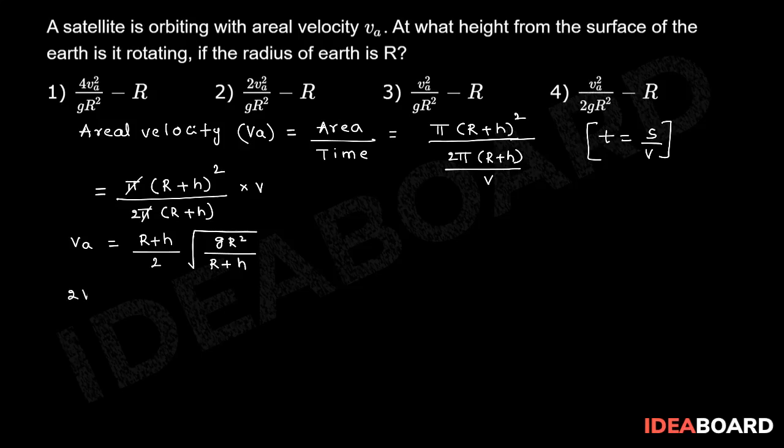So here 2 Va which is equal to r plus h into gr square by r plus h. So squaring on both sides.